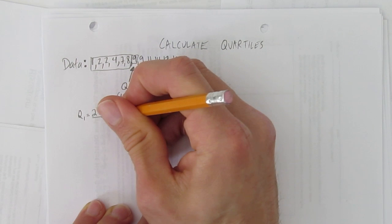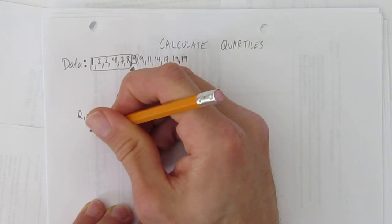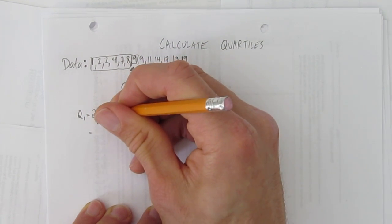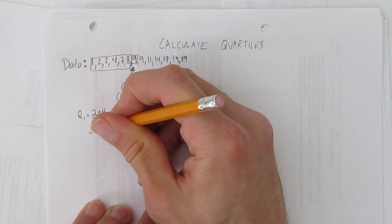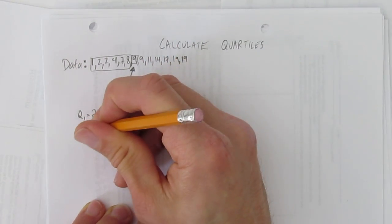I want 2 and 4, and to find out their average, I just add them together and divide by 2. What's 2 plus 4? 6. 6 divided by 2 is 3. So I know Q1 is 3.